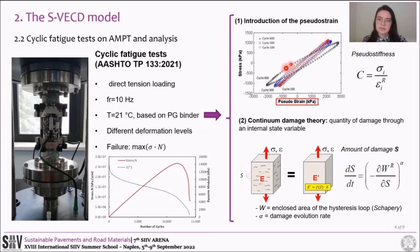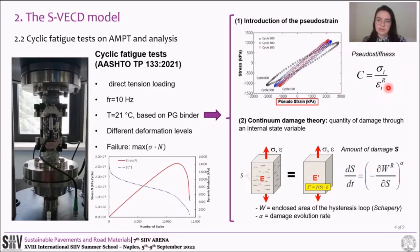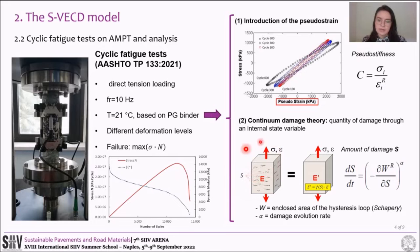As can be seen in the hysteresis loops, the viscous damping effects are removed and only the actual fatigue damage is taken into account. The pseudo stiffness C is defined accordingly. Moreover, the amount of damage is defined with the internal state variable S, which allows considering the body as a continuum instead of evaluating the damage at a micro-scale level.